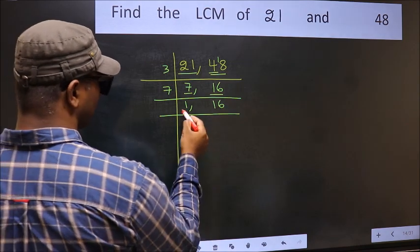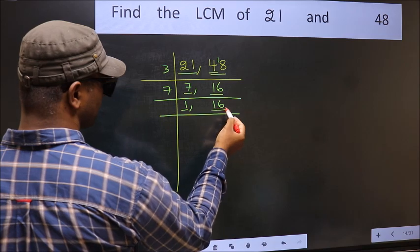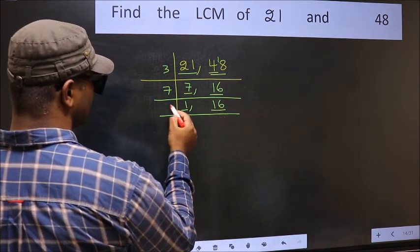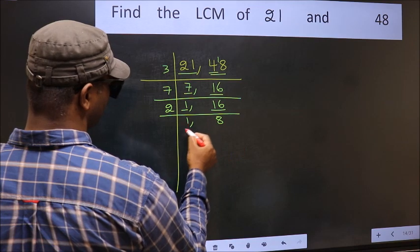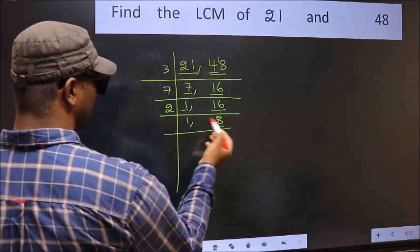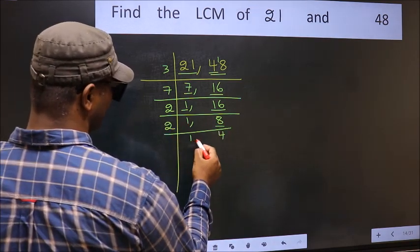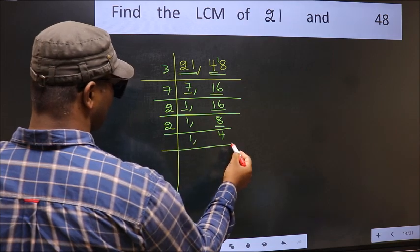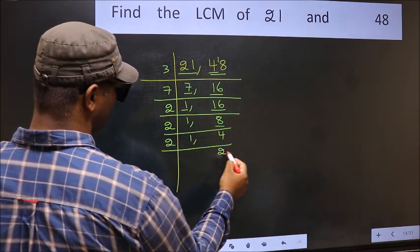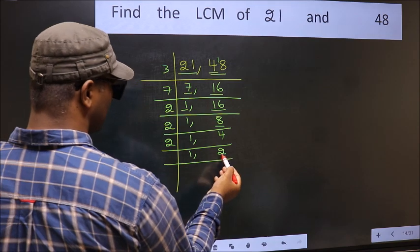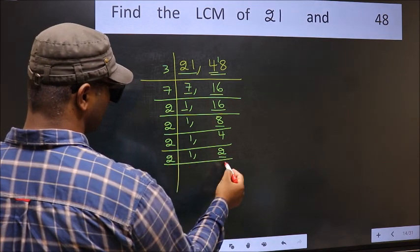Now we got 1 here, so focus on the next number, 16. 16 is 2 times 8. Now we have 8: 8 is 2 times 4. Now we have 4: 4 is 2 times 2. Now we have 2: 2 is a prime number, so 2 times 1 is 2.